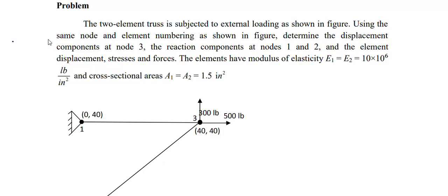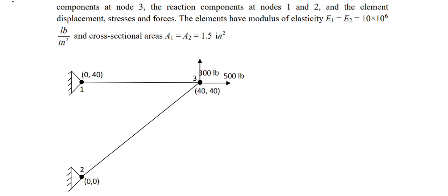Today I am going to solve a problem on a truss element using finite element analysis. You can see the question on the screen — there are two elements with geometry given in the question, subject to external loading as shown in the figure. You need to determine the displacement at node 3 and also the reaction components at nodes 1 and 2, which are fixed. There will be reaction forces there, and the element displacement, stresses, and forces — everything you have to calculate.